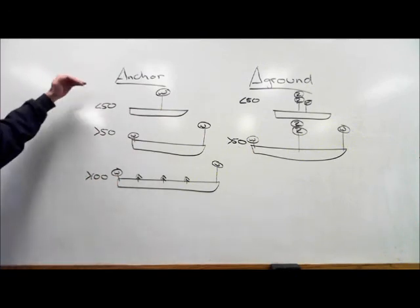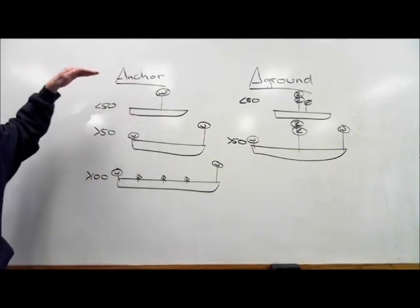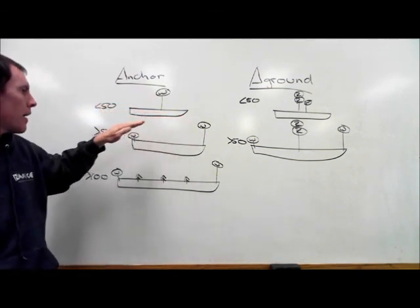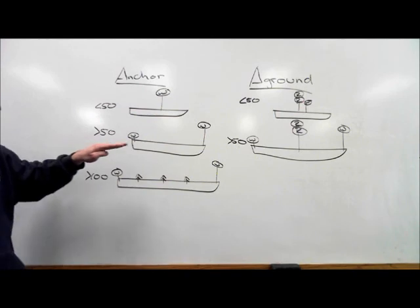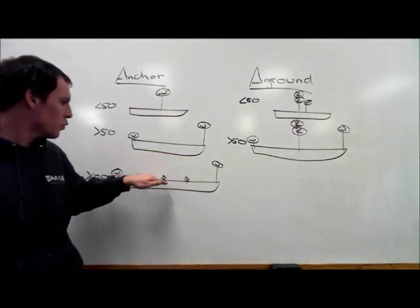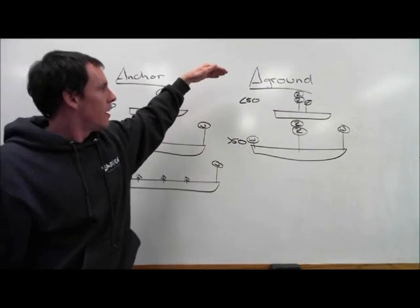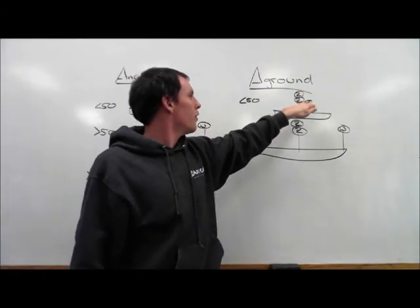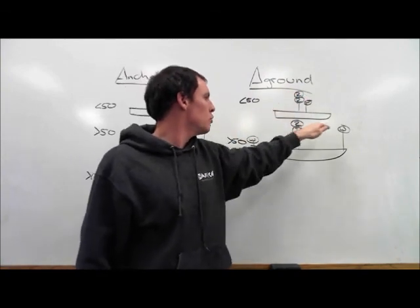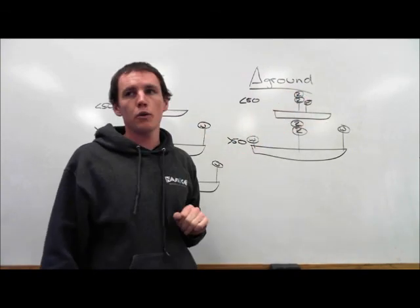Okay. A vessel at anchor. Under 50 meters. One white all-round light. Over 50 meters. Two all-round white lights. High one in the bow. Low one in the stern. Over 100 meters. Two all-round white lights. High one in the bow. Low one in the stern. Working lights or equivalent to illuminate her decks. A vessel aground. Under 50 meters. One white light and two reds. Over 50 meters. Two white lights and two reds. Shallow water ahead.